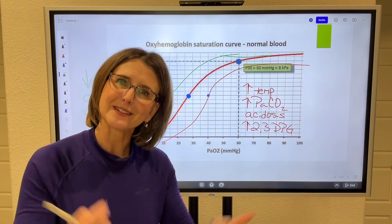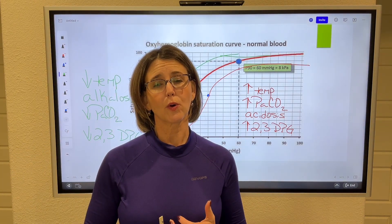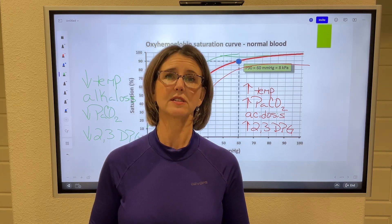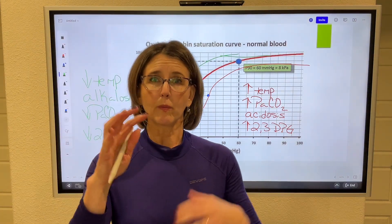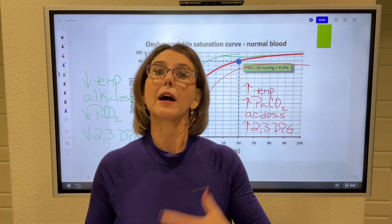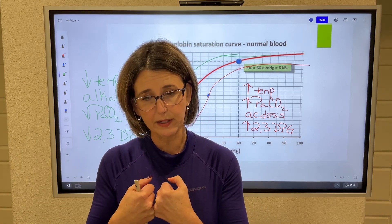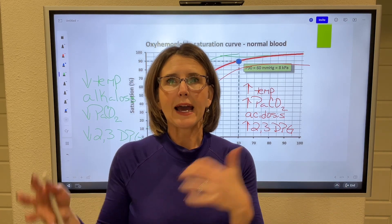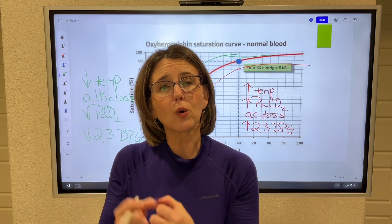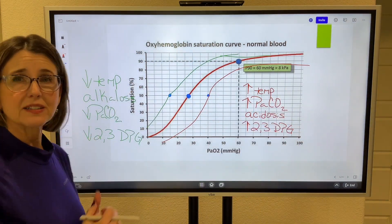Why do we need to know this as a respiratory therapist? Here's one example. We say that for a head trauma patient with elevated ICPs, we need to hyperventilate them. Hyperventilation causes an alkalosis — that shifts the curve to the left, so hemoglobin holds on to oxygen. We don't want the brain to get hypoxic, so we have to make sure we've got plenty of oxygen dissolved in plasma. If we accidentally hyperventilate a patient on a vent, the hemoglobin is going to hold on to oxygen and tissues may get hypoxic. This is relevant in clinical practice.